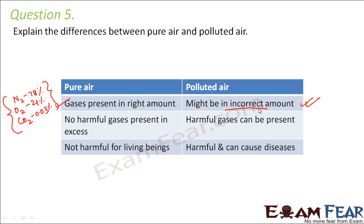In polluted air, there will be more of poisonous gases like carbon monoxide, carbon dioxide, and sulfur dioxide — all these harmful gases will be present in excess. In pure air, there are no harmful gases present in excess.